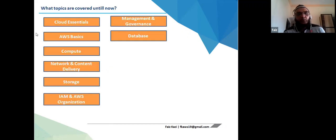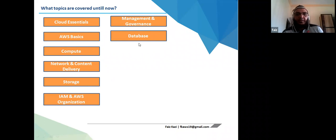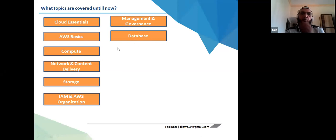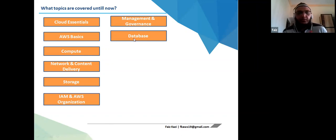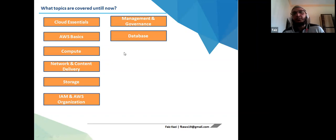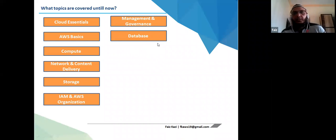We've already covered management and governance — CloudWatch, CloudTrail, monitoring, and auditing. We covered database basics, the primary DR concept, single-AZ and multi-AZ requirements. We talked about types of databases in AWS: the relational database system RDS — MariaDB, Oracle, MySQL — DynamoDB as a NoSQL database, and data warehousing concepts including analytics.